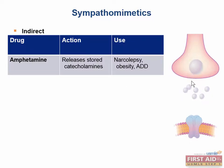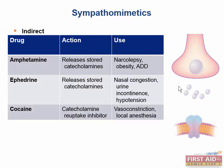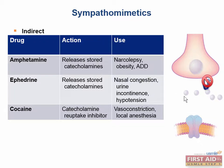Amphetamines cause increased catecholamine levels by releasing stores from the nerve terminal. Ephedrine also releases stored catecholamines and is used to treat nasal congestion, urinary incontinence, and hypotension. Cocaine prevents catecholamine reuptake, causing vasoconstriction by increasing the availability of catecholamines in the synaptic cleft to bind to receptors. Cocaine can lead to vasospasm, which increases the risk for myocardial infarction and stroke.